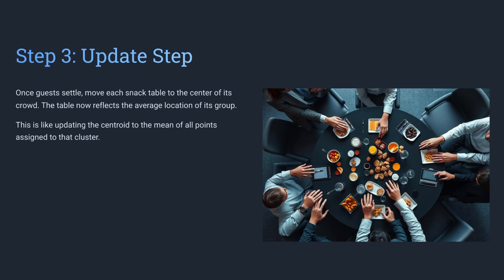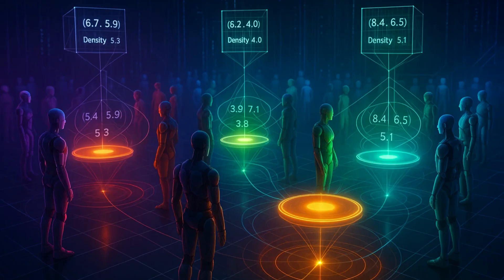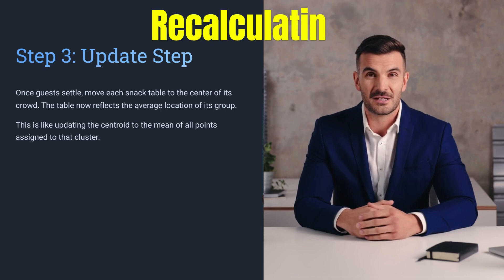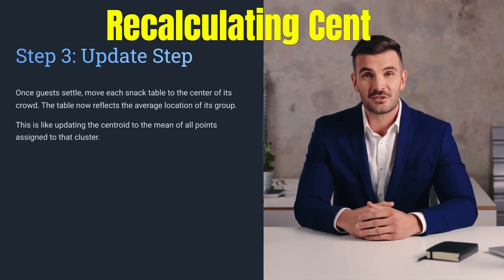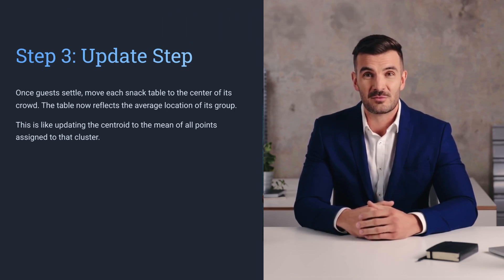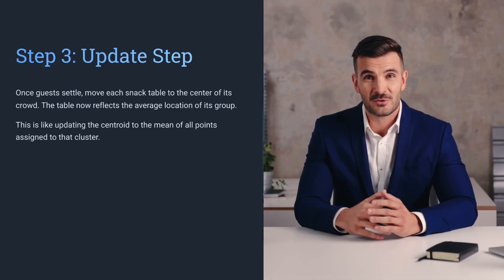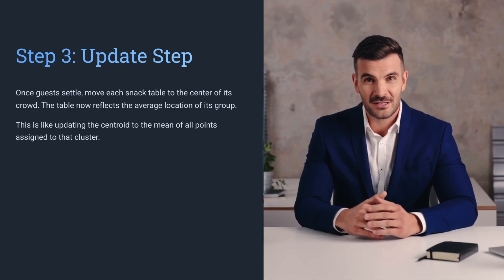Step 3: Update step. Once guests settle around their snack tables, move each table to the center of its group. This is like recalculating the centroid in k-means clustering — it reflects the average location of all the data points assigned to that cluster.